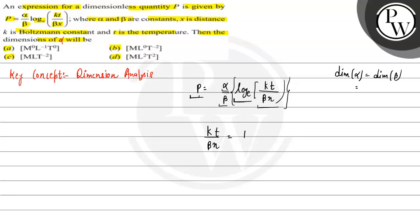Now I need to find the dimension of alpha. I have no hint here, but I can use the beta dimension. So kt by beta x equals 1. kt by beta x - k is a constant, t is temperature.